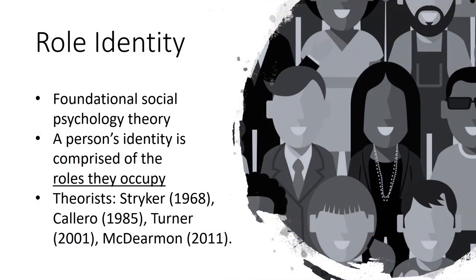As I went down this road in my doctoral program, I started thinking about how we can measure who alumni are, what they are doing, and where they are. And I stumbled upon something called role identity. I'll take you back to college, maybe to a psychology class that you took, and remind you that role identity is a foundational social psychological theory. It's one of the oldest ways of understanding how human beings interact with each other.